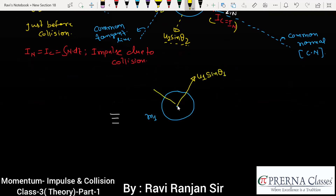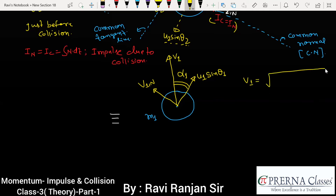So V1 is the resultant velocity of m1. Due to normal impulse, velocity changes along the common normal, and this value is V1N. So the resultant velocity of m1 is V1, and if we consider the angle it makes with the common tangent as alpha1, then the magnitude of V1 will be the vector sum of the two components: the square root of (U1 sin theta1) squared plus (V1N) squared.